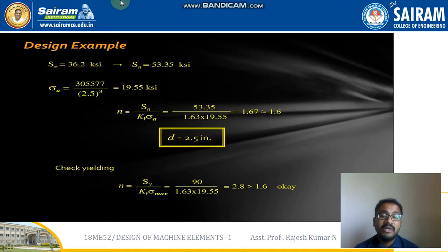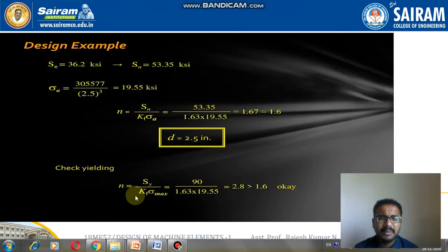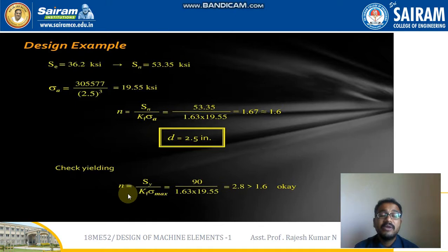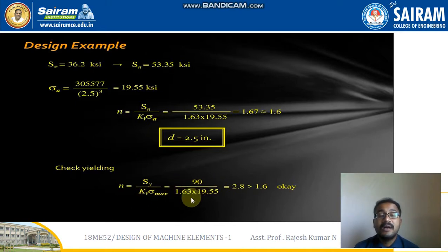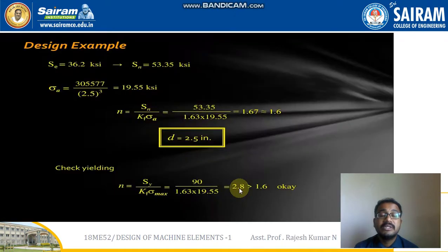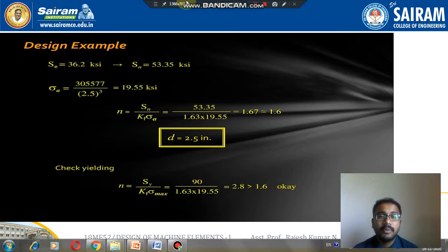With d = 2.5 inches, S_e = 36.2 N/mm². The alternating stress σ_a = 305,577 / 2.5³ = 19.55 N/mm². The factor of safety n = S_N / (K_f × σ_a) = 53.35 / (1.63 × 19.55) ≈ 1.67 ≈ 1.6, confirming d = 2.5 inches. Yield check: n = S_y / (K_f × σ_max) = 90 / (1.63 × 19.55) = 2.8, which is greater than 1.6, so the design is safe.